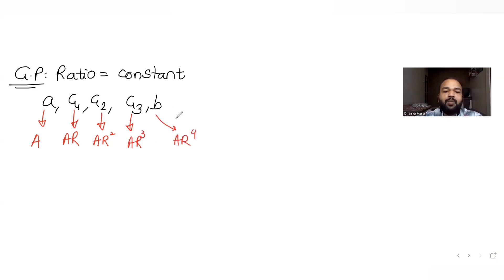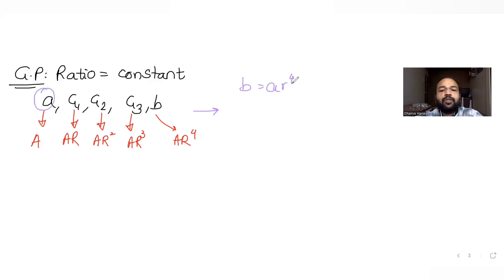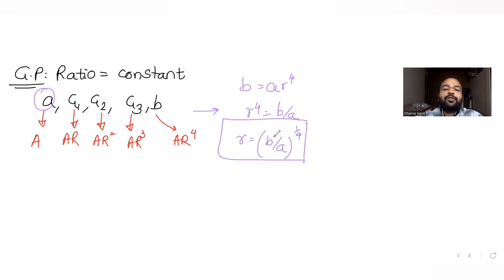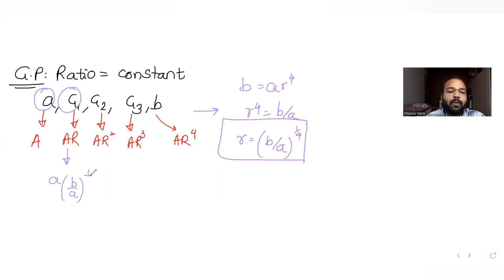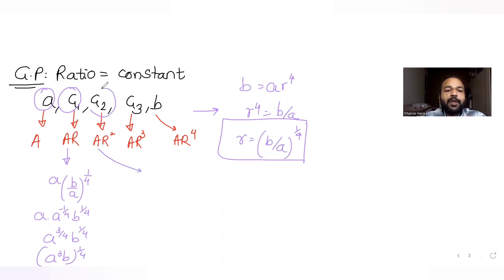The last term is b = a·r⁴, so r⁴ = b/a, giving common ratio r = (b/a)^(1/4). The first geometric mean is g1 = a·r = a·(b/a)^(1/4) = a^(3/4)·b^(1/4), which can be written as (a³b)^(1/4).